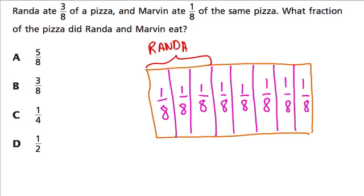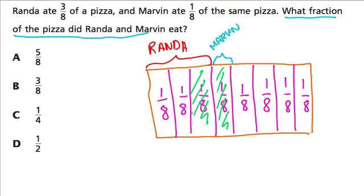Then Marvin comes along and eats one-eighth, maybe this one right here. What are they asking? They're asking what fraction of the pizza was eaten by Rhonda and Marvin. If we lightly color this in to figure out what's happening, we can see that the total area that's shaded is half of all the pizza.